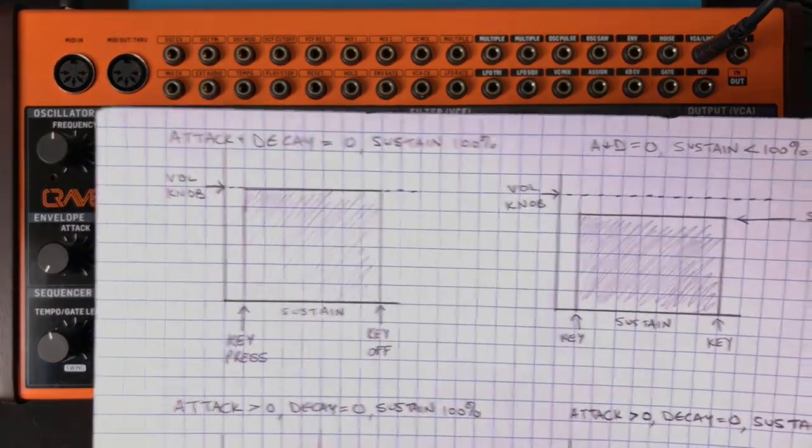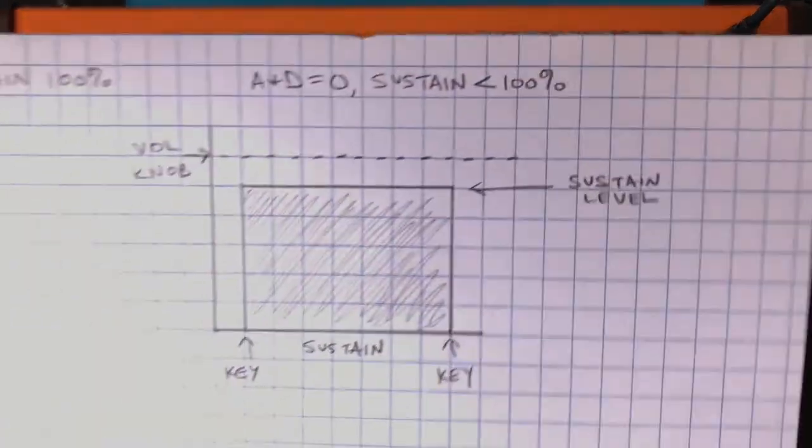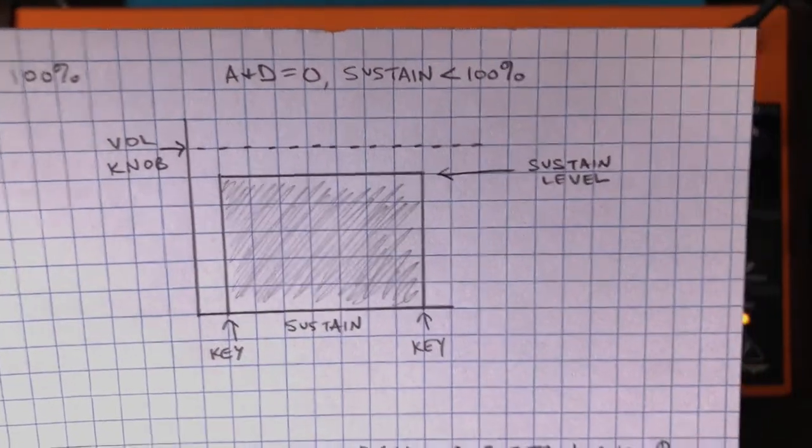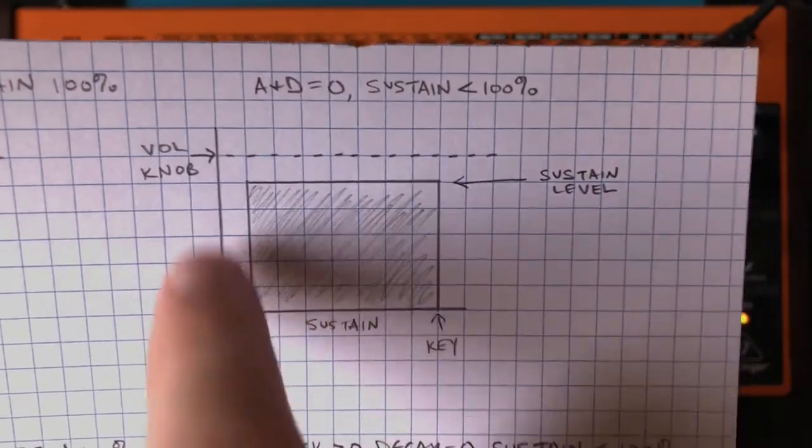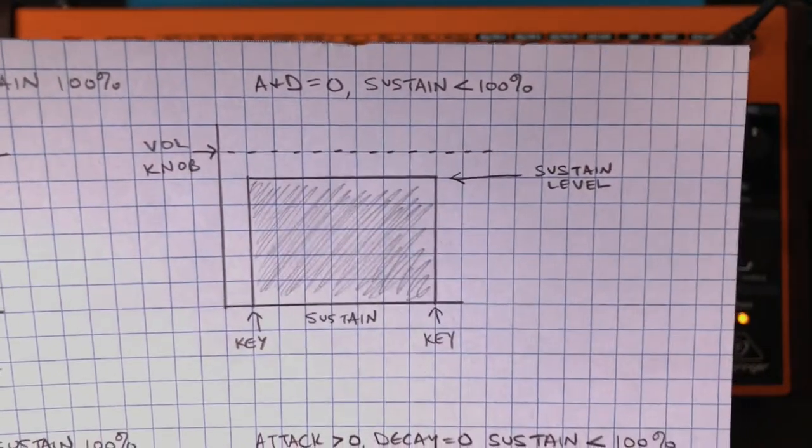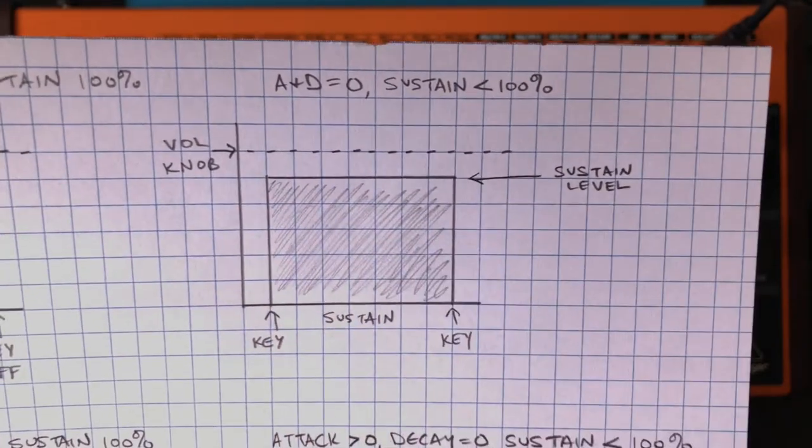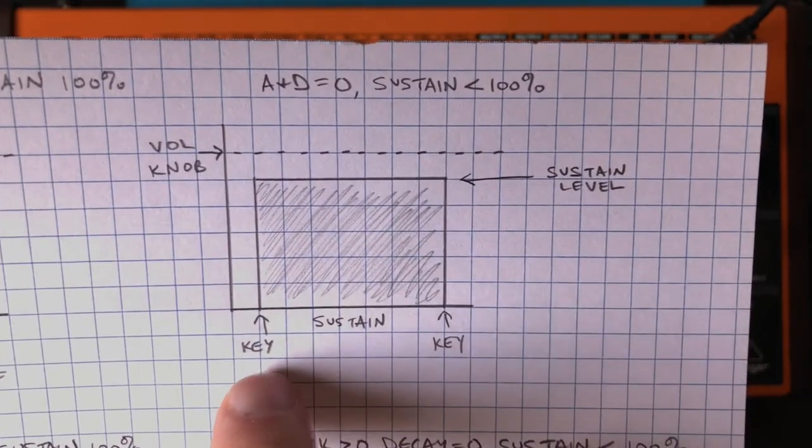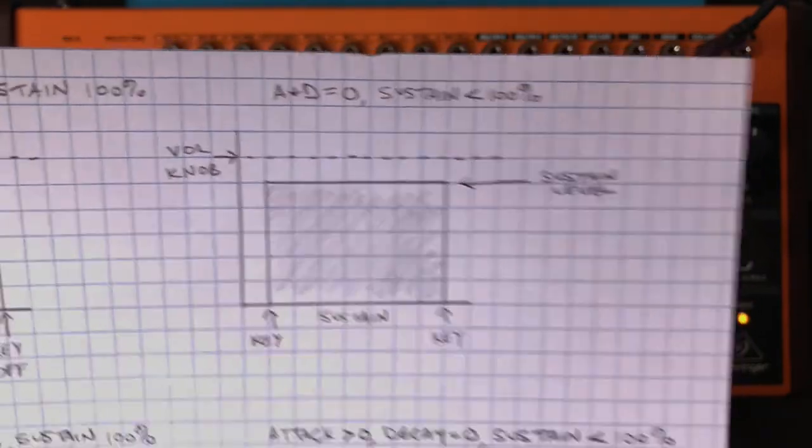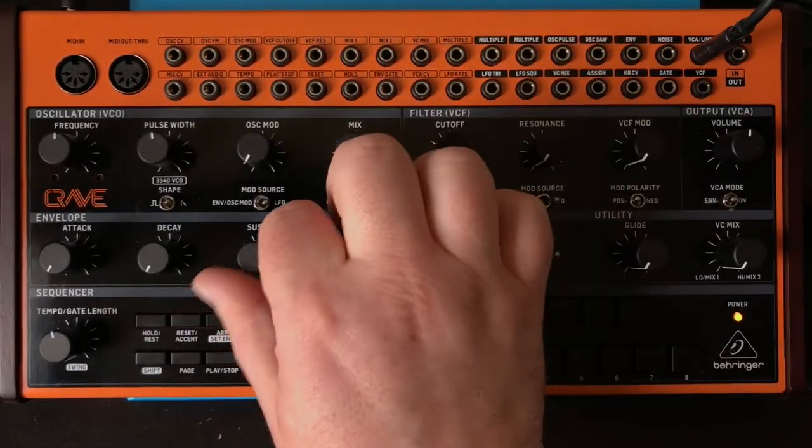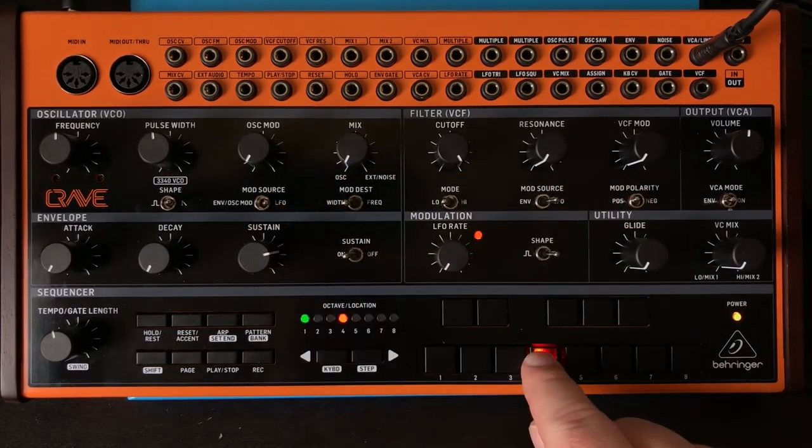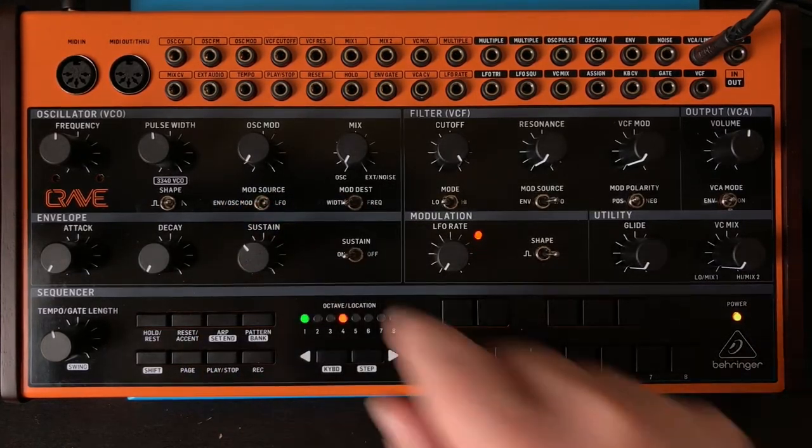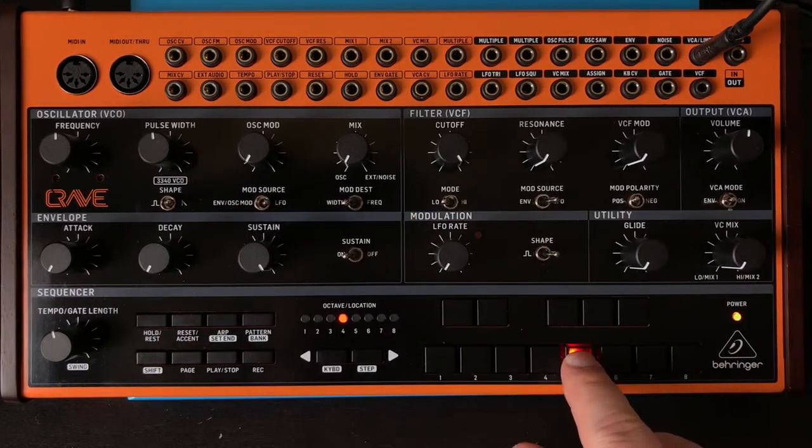Now, let's start to make some adjustments to that. If we come over here, we're leaving the attack and the decay at zero, but this time we're going to turn the sustain down a little bit. So instead of it sustaining at the max volume that the knob is set at, it's going to sustain at a lower volume. But the other actions are the same. It starts right away, and it ends right away. So it's just a quieter sound. So wherever I turn this, that will be the volume of the pitch.